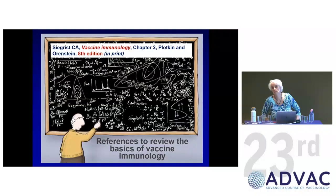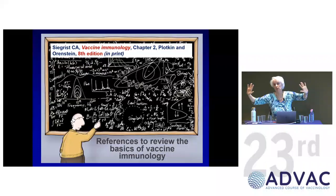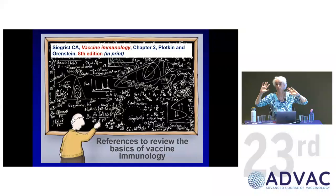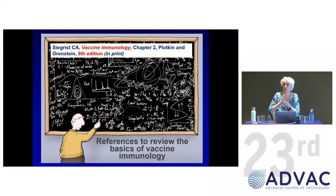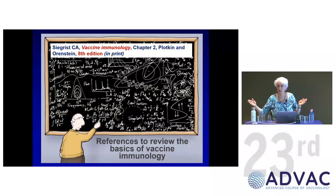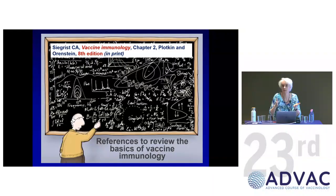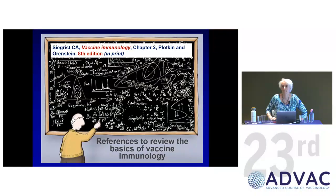Q: What are your thoughts on vaccinating preterm infants? A: There will be a great dedicated lecture next week. The basic rule is: do not correct for chronological age. What triggers immune maturation is exposure to the external world. If birth occurs at seven months gestation, the counter starts ticking from birth. At 42 days of age — six weeks — the child is eligible for their first dose regardless of gestational age at birth.